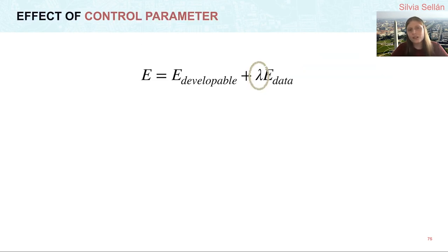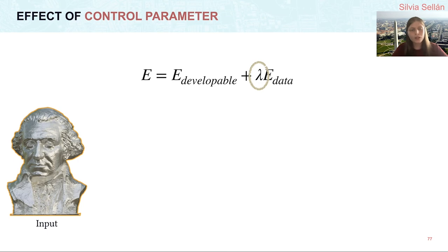Finally, let's take a look at the effect of our lambda parameter in the output. Since a higher lambda means more weight to data fidelity, we expect that higher lambdas will produce outputs closer to the original heightfield, maybe at the cost of producing more patches or more creases, while a lower lambda will do just the opposite.